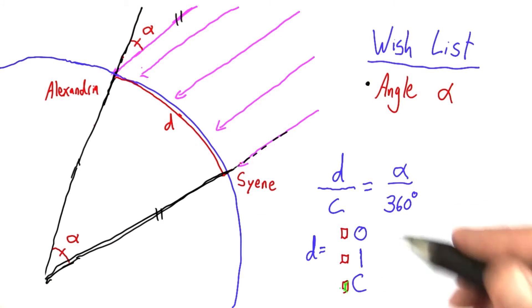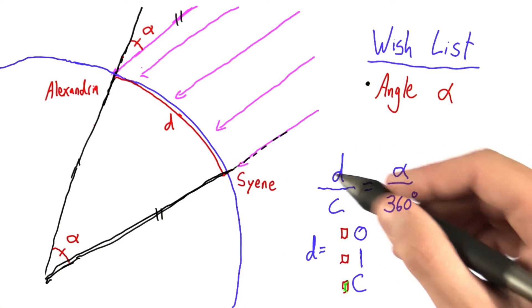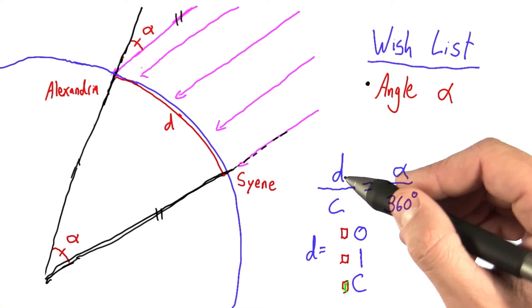And that's right. It would have to be c. If alpha is 360 degrees, that means we're looking at the entire circumference. This d would be identical to c.